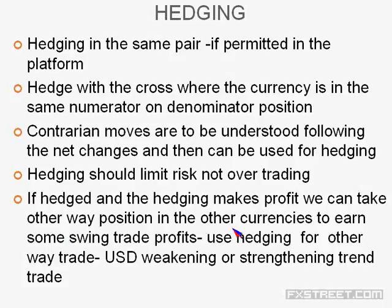If the hedge position is making profit, you can take other positions in other currencies to earn swing trade profits. For example, if your Euro buy is hedged and you find GBP is also dropping, you can quickly take a sell in GBP for 30-40 pips. Similarly, take a buy in Euro/CHF for 30-40 pips. All these trades can be done after keeping stop at entry in every trade. The hedging also indicates you are on the wrong side, giving you a cooling period of 30 minutes to watch.